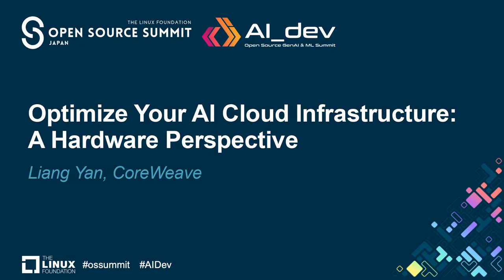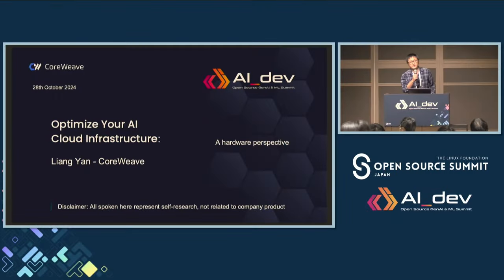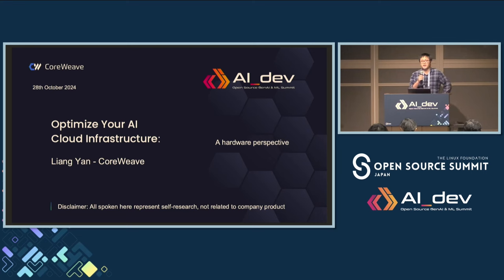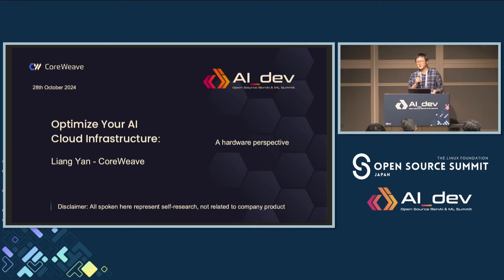Hello everyone. My name is Liang Yan. I'm a performance engineer from CoreView. CoreView is a GPU cloud provider based in New York, and we mainly provide GPU to our customers based on Kubernetes cloud. For me, I'm on the performance side for the whole AI infrastructure — basically how to make our platform more efficient, with better performance either for one node or for the whole cluster, and provide consulting to our customers to get better machine learning performance.